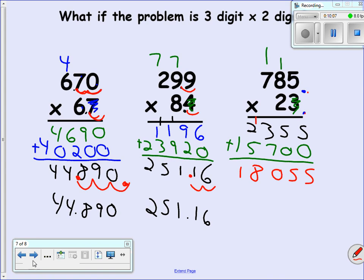Both decimals are to the right, so there's no numbers behind the decimal. So my comma would go right there.